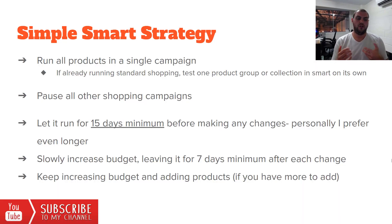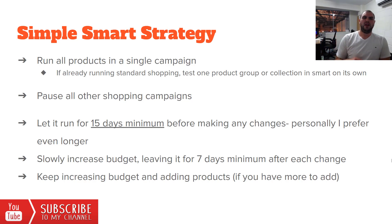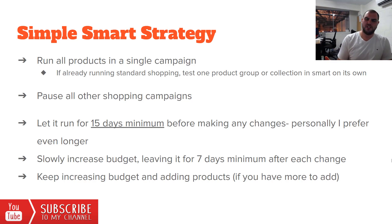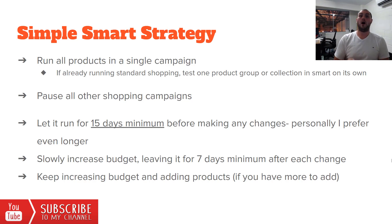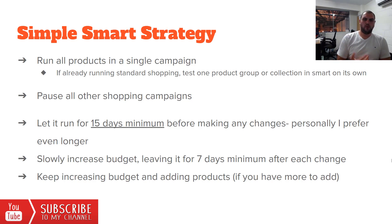Now for the strategy. There's a very simple Smart Shopping testing strategy: run all your products in a single campaign. If already running standard shopping, test one product group or collection in smart on its own — this is a good way to warm up clients and show you can transition to a smart strategy. Your focus will be more on feed optimization rather than campaign. Make sure you pause all other shopping campaigns, otherwise the smart one is just going to take over anyway.